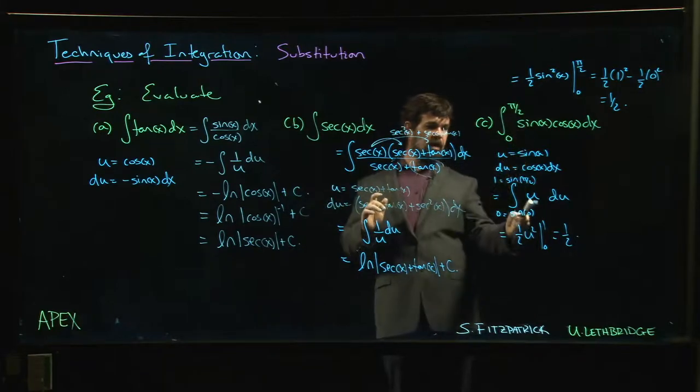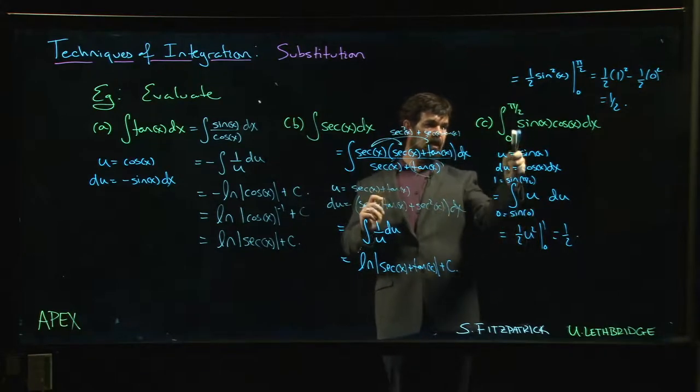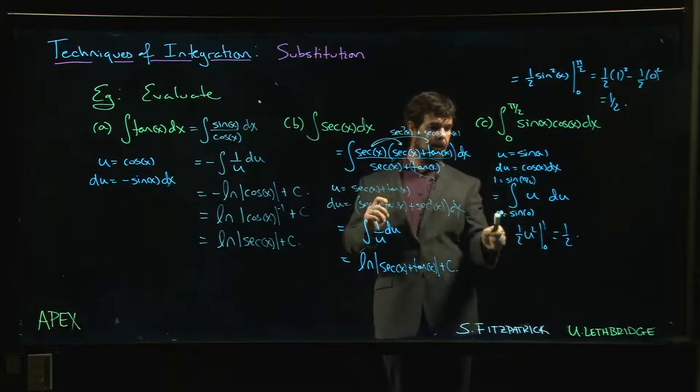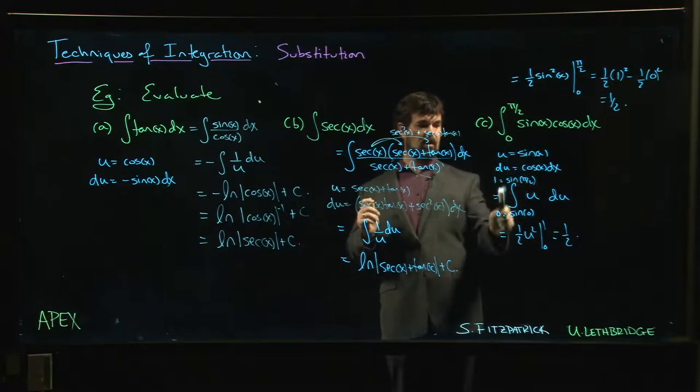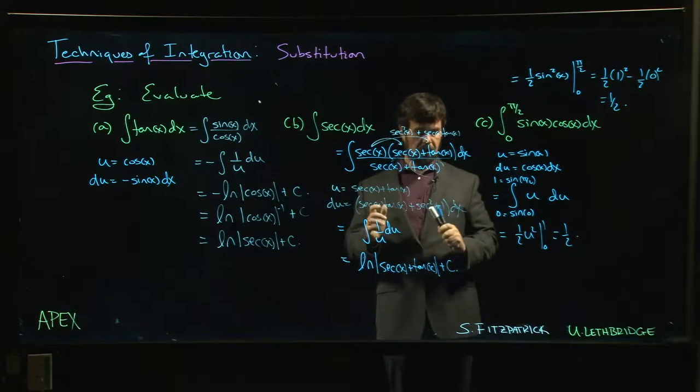Or when you do that u sub, bring the limits along for the ride, but remember that they change. You have to plug the x values in. These are x values. You plug them into the function to get the corresponding u values. So instead of going from 0 to pi over 2, we go from 0 to 1.